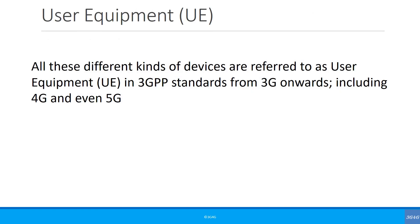All these different kinds of devices are referred to as user equipment or UE in 3GPP standards, from 3G onwards and including 4G and even 5G.